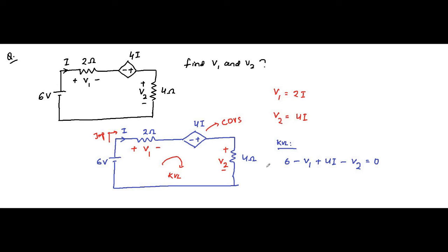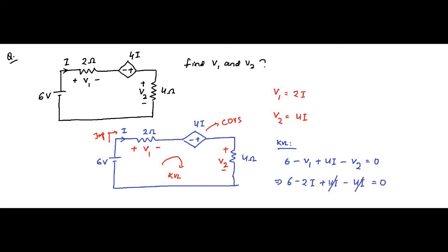We bring the entire equation in terms of I. Replacing v1 with 2I and v2 with 4I: 6 minus 2I plus 4I minus 4I equals 0. The 4I terms cancel, leaving 6 minus 2I equals 0. This implies 2I equals 6, so I equals 3 ampere.